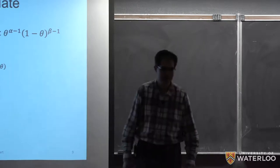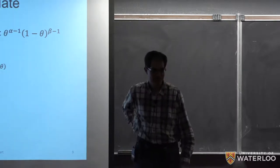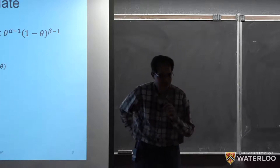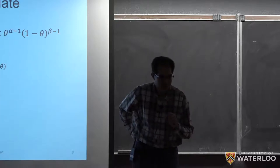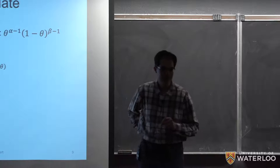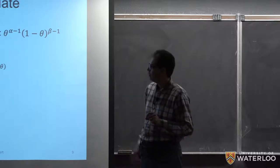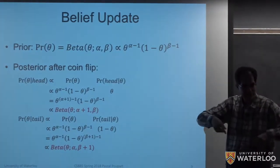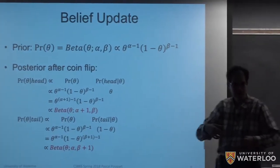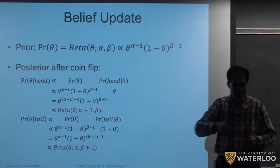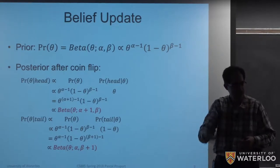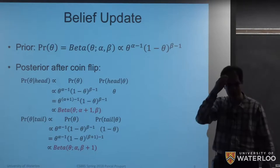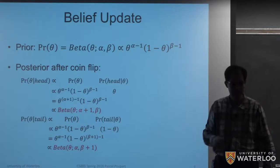A student asks whether actions are assumed to be independent. The instructor confirms: yes, that's the assumption — each time you execute an action, the outcomes are independent, like rolling a die where each roll is independent of previous ones.